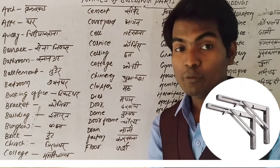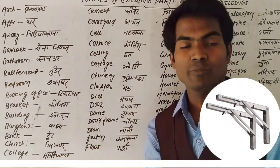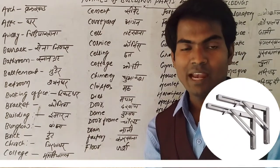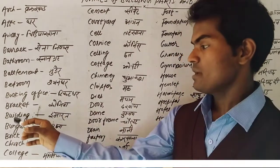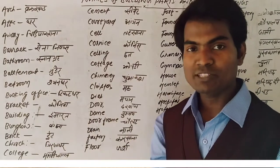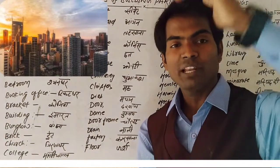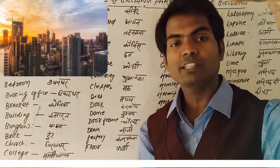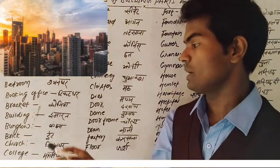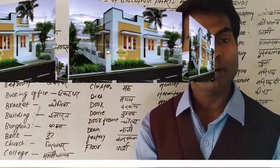Bracket — bracket ka matlab hota hai 'koniya,' and it is one type of instrument used to make a building. Building — building means 'imarat,' the big buildings that have 10th floor, 20th floor, 25th floor, that is called a building. Bungalow means 'bangla.'